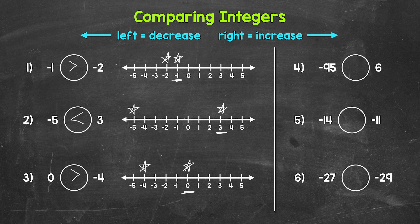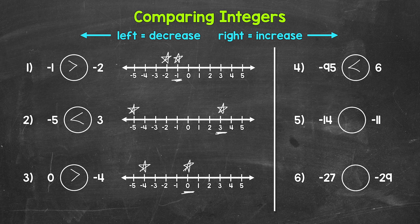Let's move on to number four, where we have negative 95 is greater than, less than, or equal to six. We have a negative and a positive here, so the positive is automatically greater than the negative. On a number line, six is further to the right than negative 95, so negative 95 is less than six. For number five, we have negative 14 compared to negative 11 — two negatives. Negative 11 is closer to zero and further right, so negative 14 is less than negative 11.